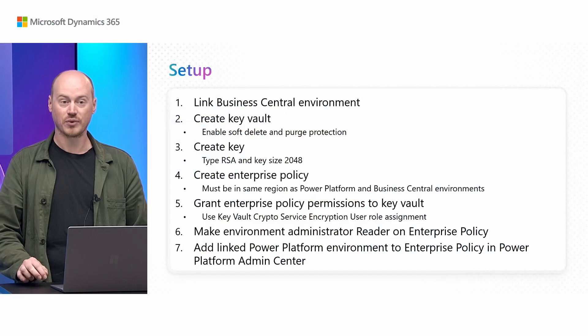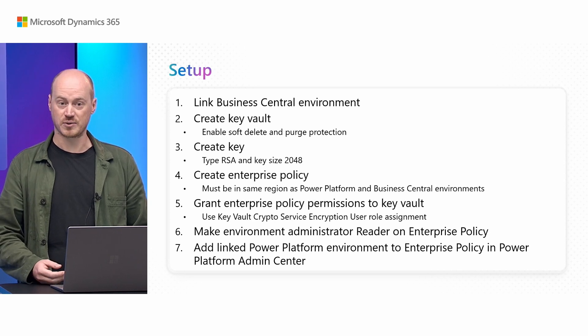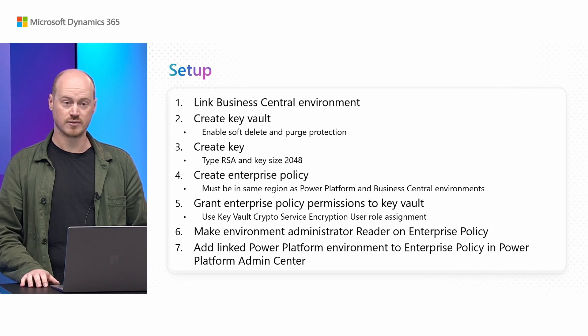After that, you make an environment administrator — someone with an entry role that allows for administration of Power Platform environments — the reader role on the enterprise policy, so that they can then go into the Power Platform Admin Center to apply that enterprise policy to the selected environment that is linked to your Business Central environment. After completing this last setup step, there could be some downtime on your Business Central and Power Platform environments, during which the encryption key used to encrypt your data gets re-encrypted with your own key.